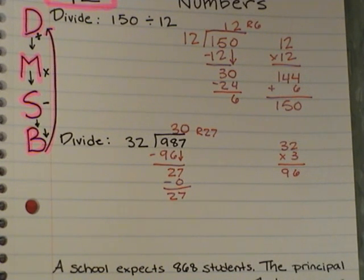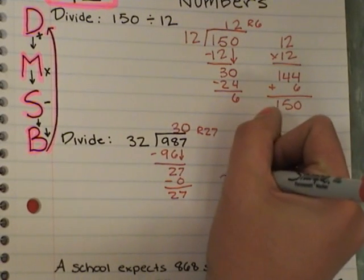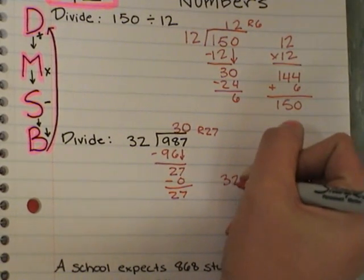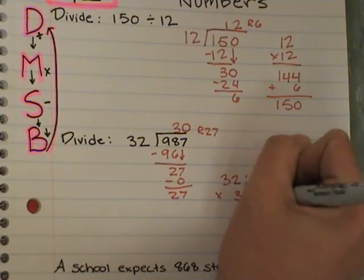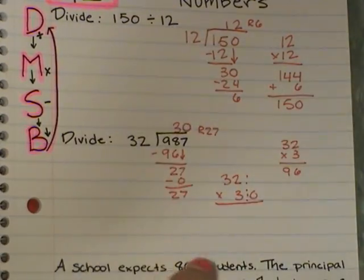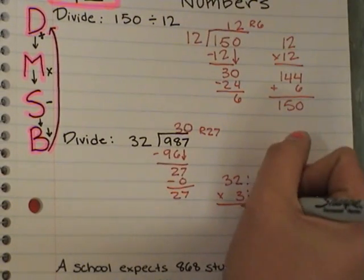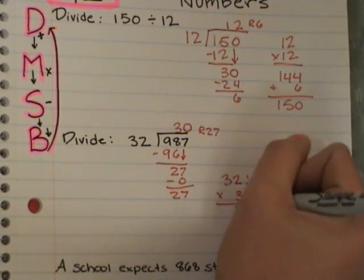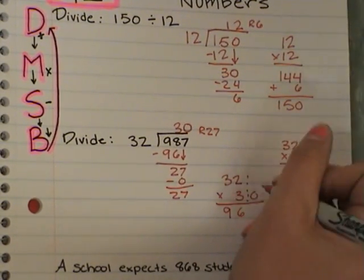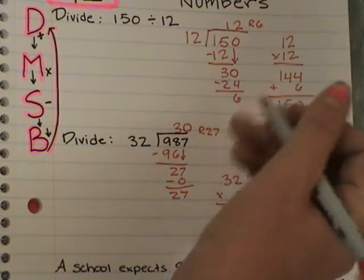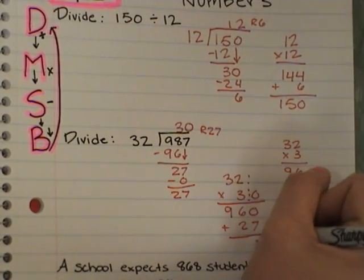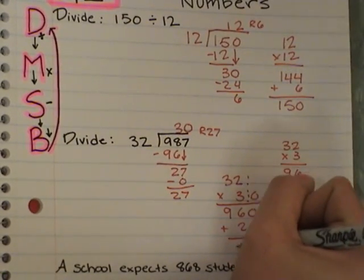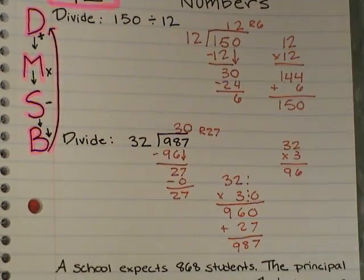Don't forget, you have to go back and check your answer. So if I do 32 times 30, again, you can do it times 3, offset your 0. 3 times 2 is 6, 3 times 3 is 9, and I have my 0. Don't forget, add 27. 7 plus 7, 6 plus 2 is 8, 9, 987. Perfect.